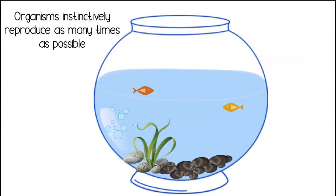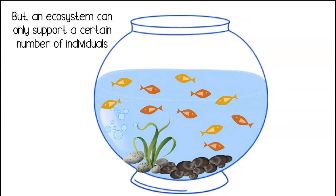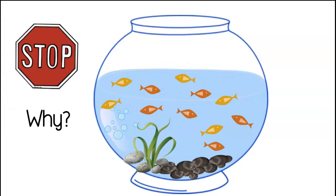Organisms instinctively reproduce as many times as possible. Populations have the potential to increase indefinitely. But an ecosystem can only support a certain number of individuals. Why?